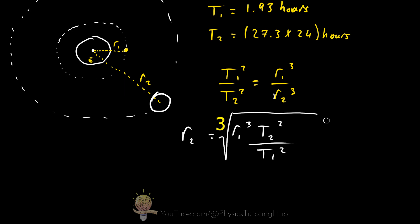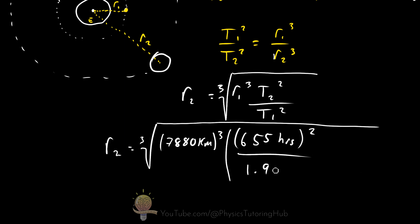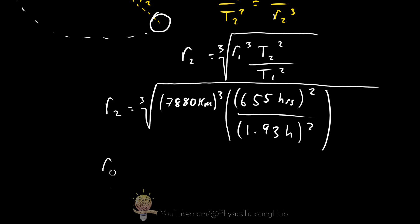And all we do now is just plug in these values. So the average Earth-Moon distance is equal to the cube root of the satellite distance cubed, multiplied by 655 hours squared, divided by 1.93 hours squared. And we get a value of 3.83 times 10 to the 5 kilometers to three significant figures, which is very close to the actual value.